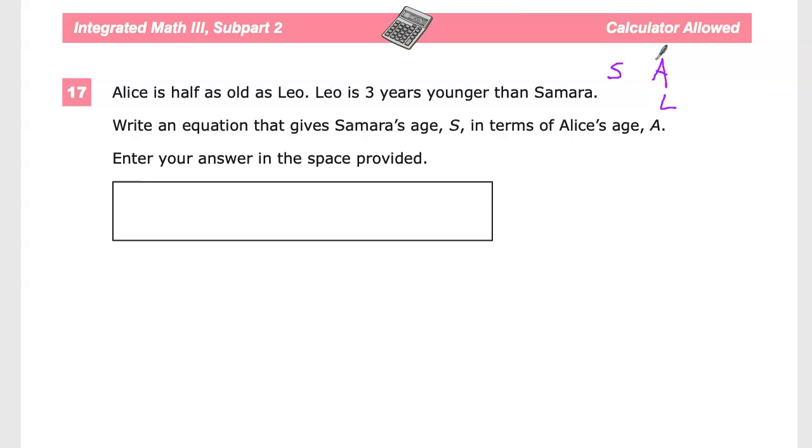I guess to get started, the best plan is to start to create variable expressions for the things that we already know. Alice is half as old as Leo. So, we can say that Alice's age is equal to, you could either do L divided by 2, or maybe you'll do one half of whatever L is. So, if Leo is 18, then Alice is 9.